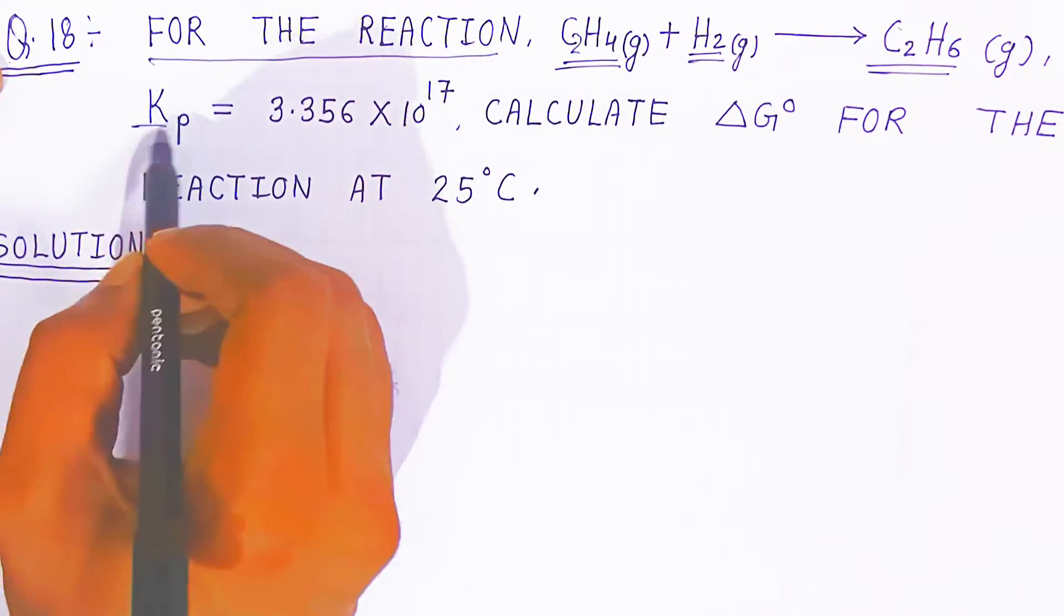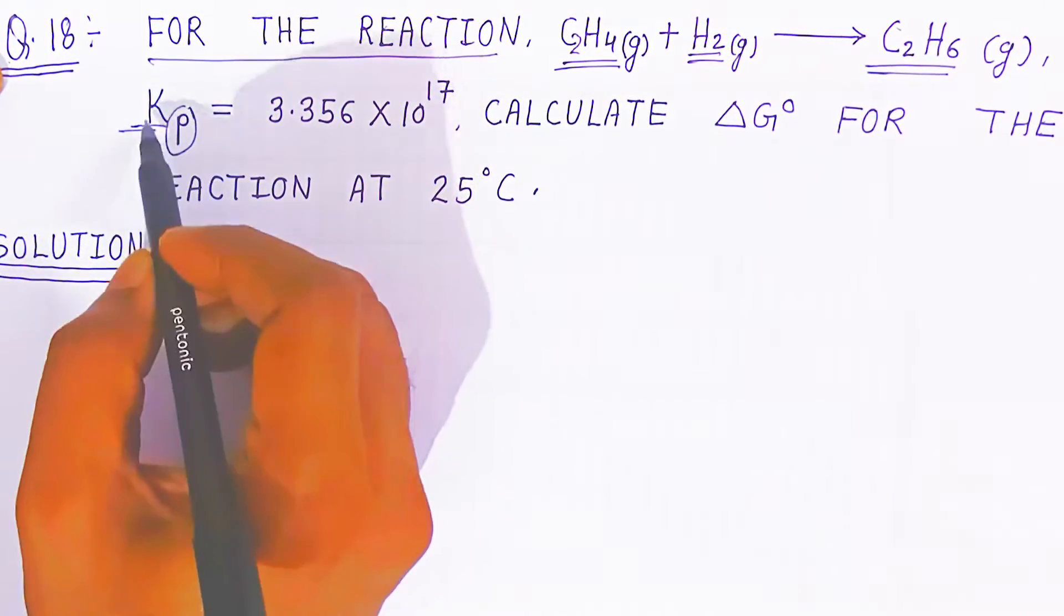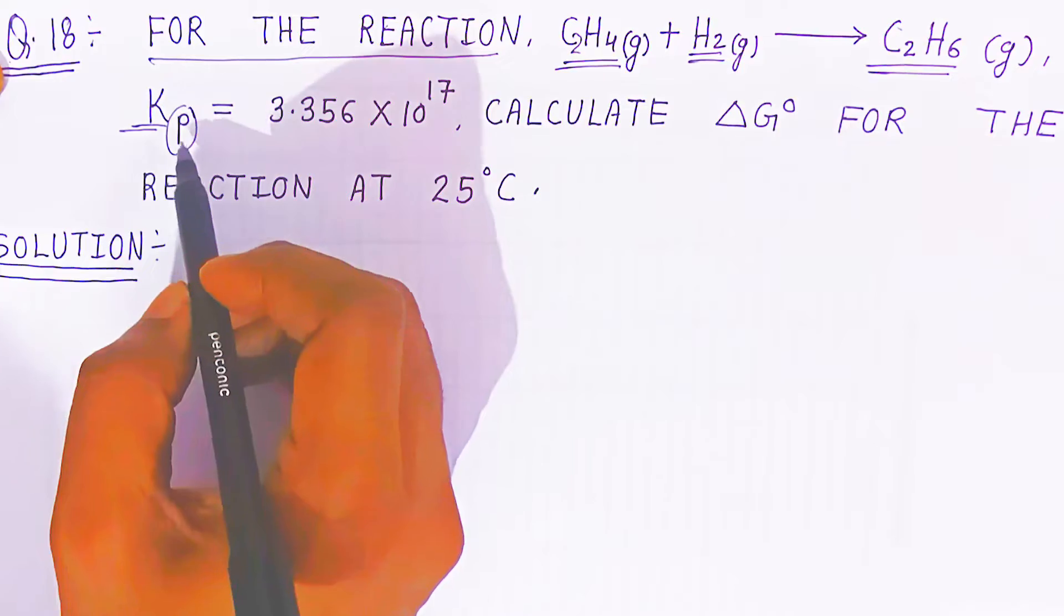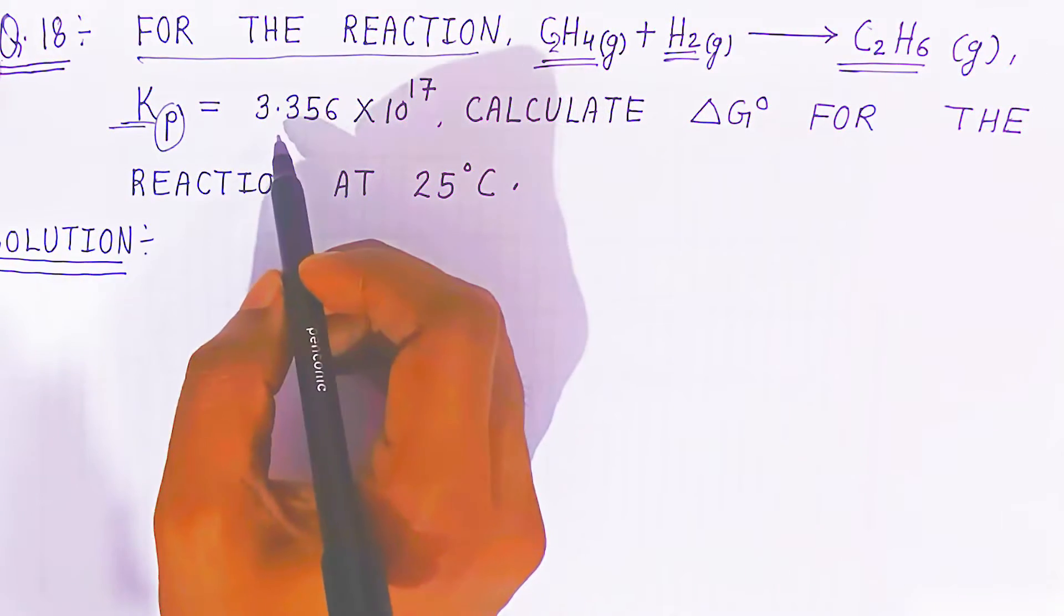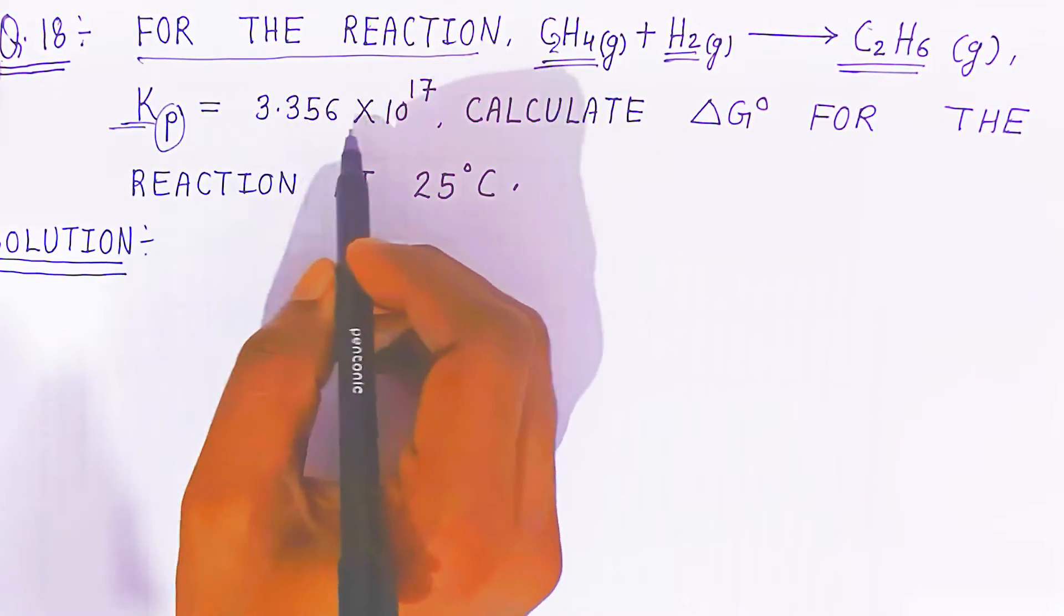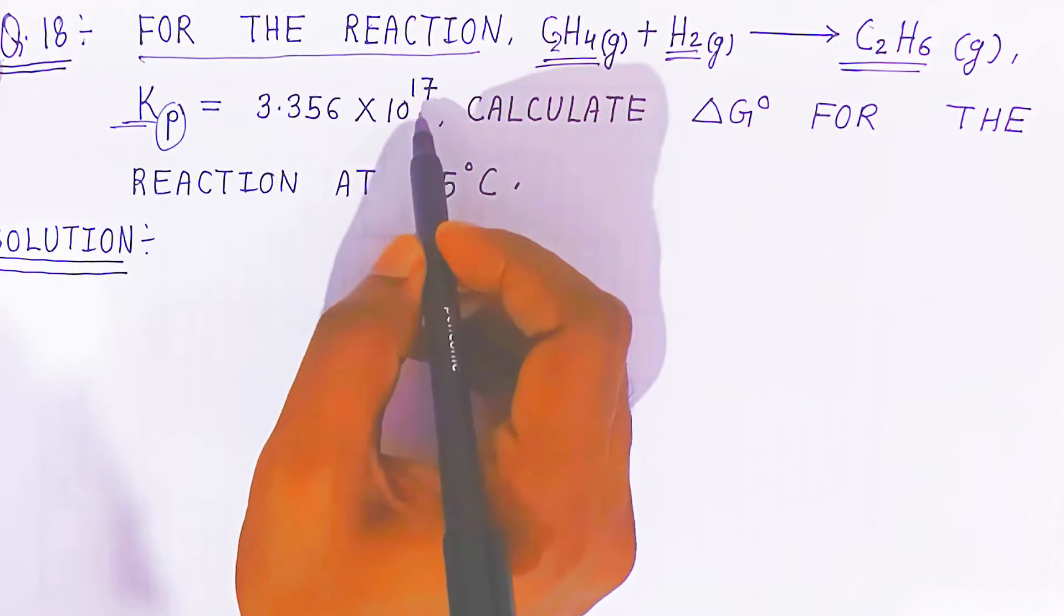At the time, Kp stands for product equilibrium constant, which is given as 3.356 × 10^-17.